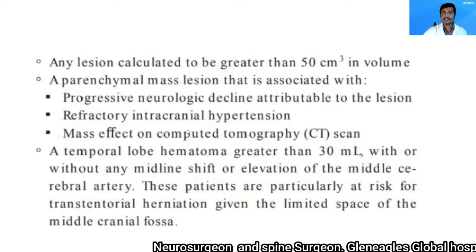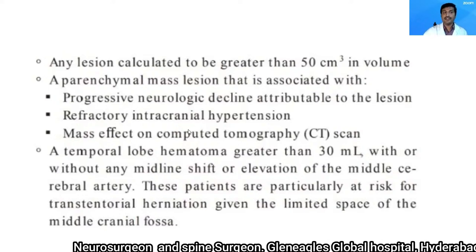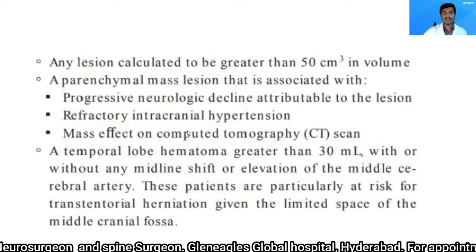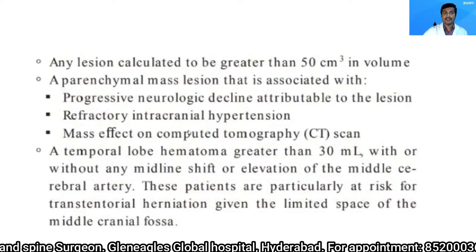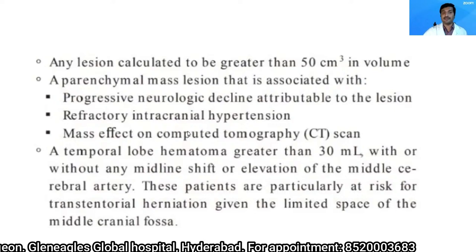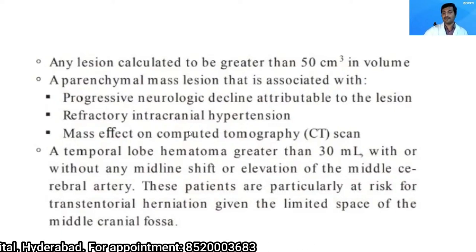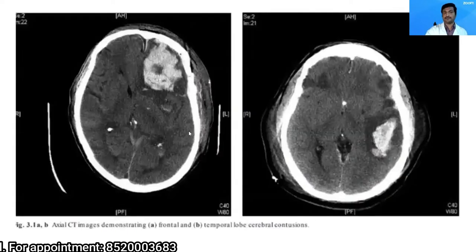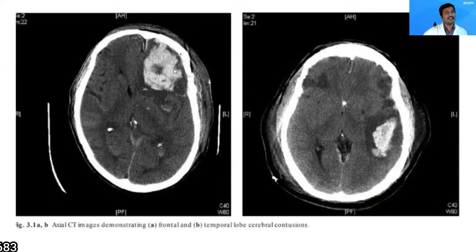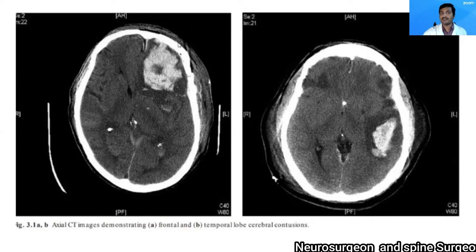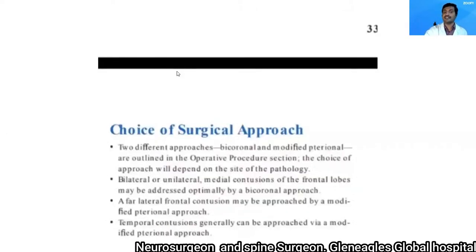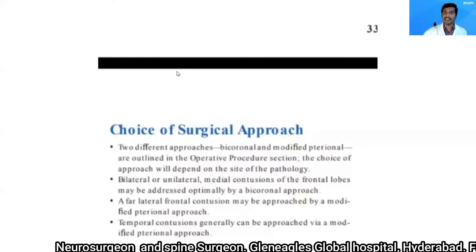Additional indications include a parenchymal mass lesion, irrespective of volume, if it is causing progressive neurological decline, refractory intracranial hypertension, or mass effect seen on CT scan of brain. This contusion can be evacuated either by the bifrontal technique or by the modified pterional technique. This session discusses the medial frontal techniques.